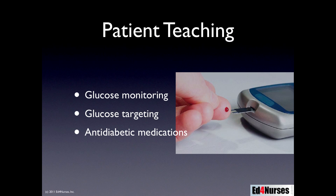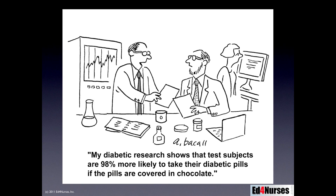Regarding anti-diabetic medications: they found that patients in the study who had the best hemoglobin A1C levels were on the highest doses of anti-diabetic medications, while patients with the highest hemoglobin A1C levels were on the fewest. So medication adherence is something we need to work on with our patients. One humorous note: diabetic research shows that test subjects are 98% more likely to take their diabetic pills if the pills are covered in chocolate!